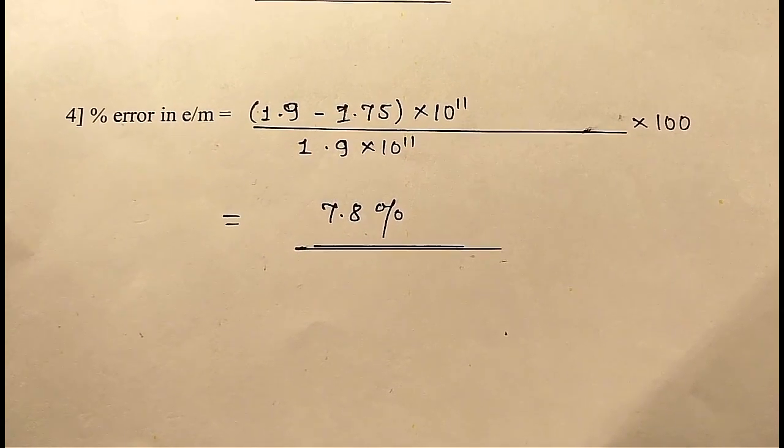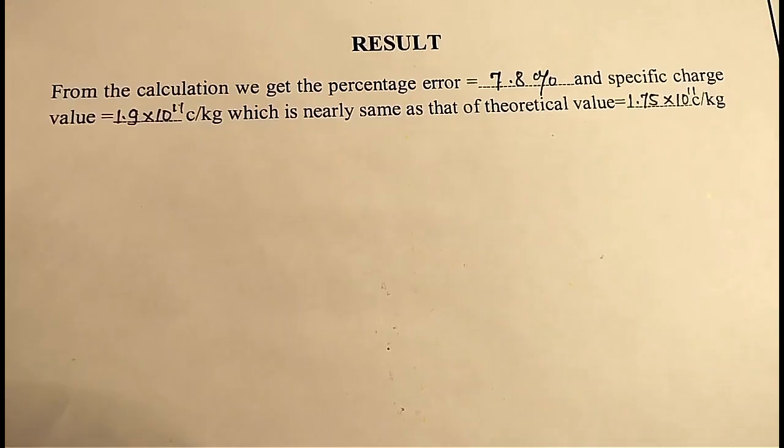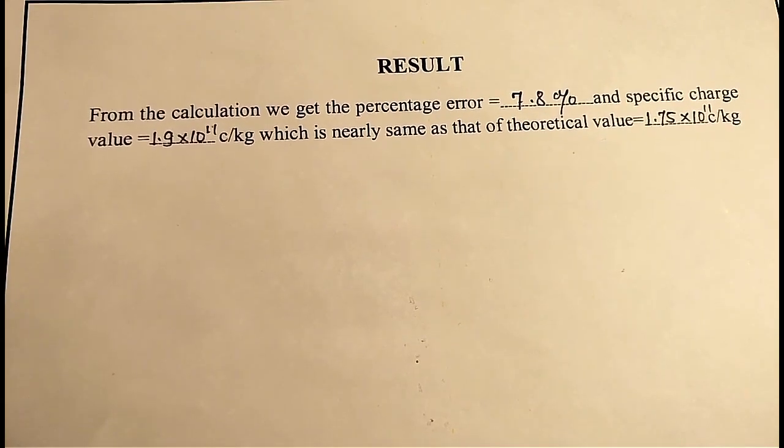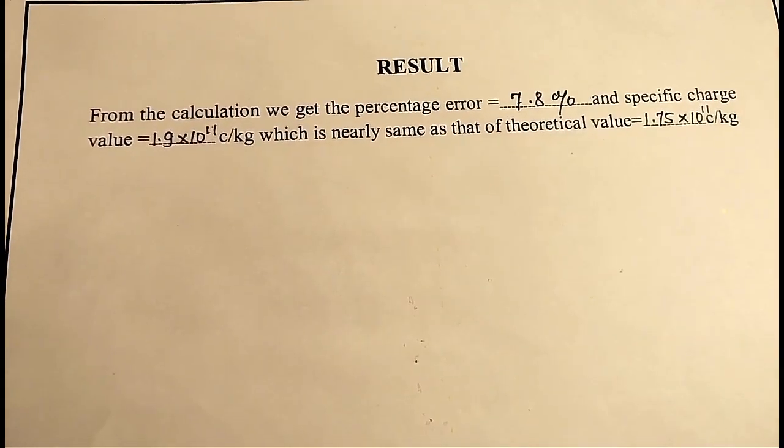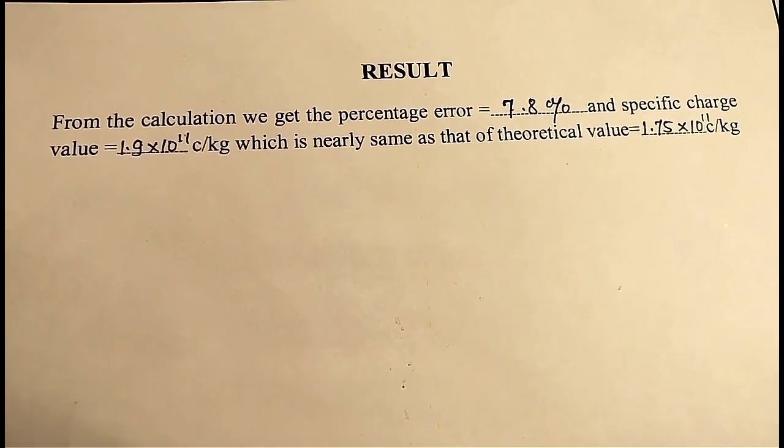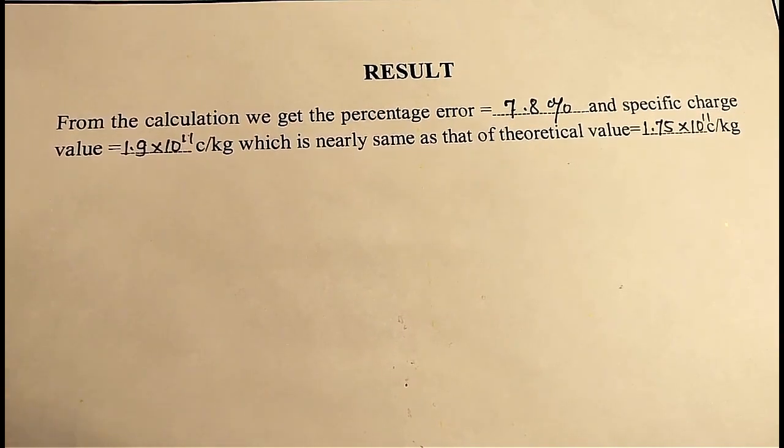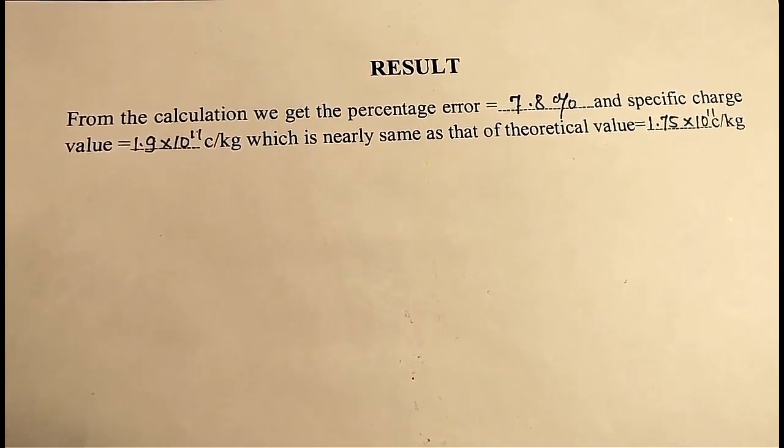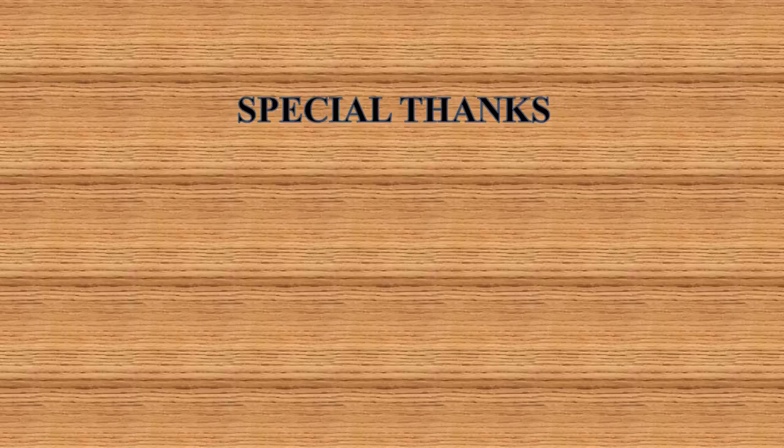Percentage error in E by M is equals to theoretical yield minus practical yield upon theoretical yield into 100, which is 7.8%. From the calculation, we get the percentage error is equal to 7.8%.